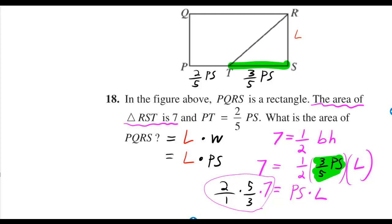Nothing cancels, but 2 times 5 times 7 is 10 times 7, which is 70, and over 3. And you can leave your answer like that.